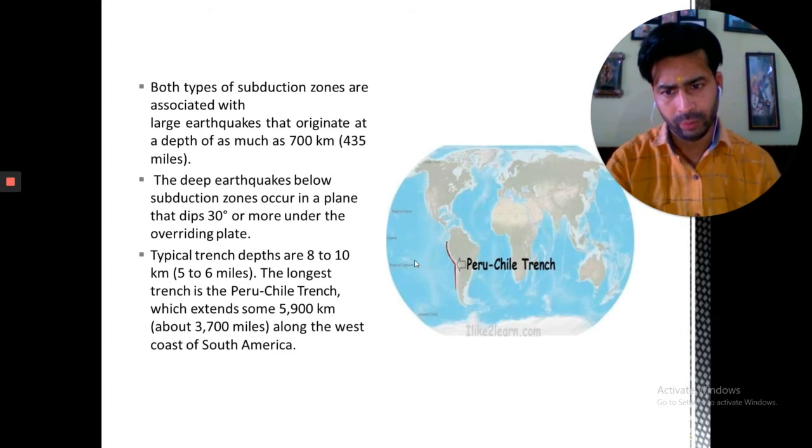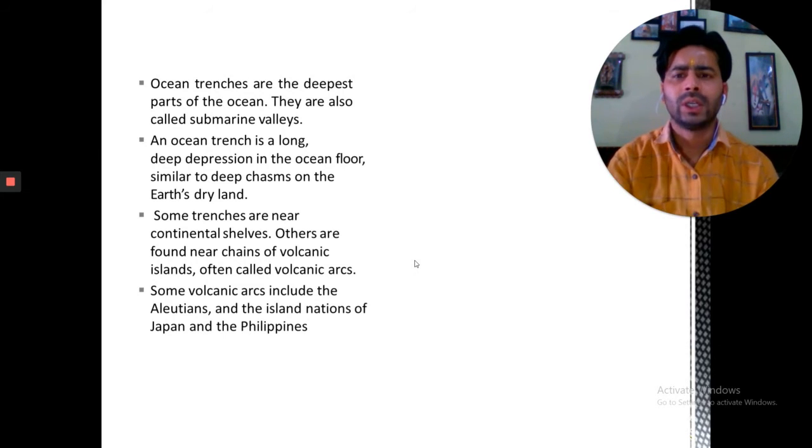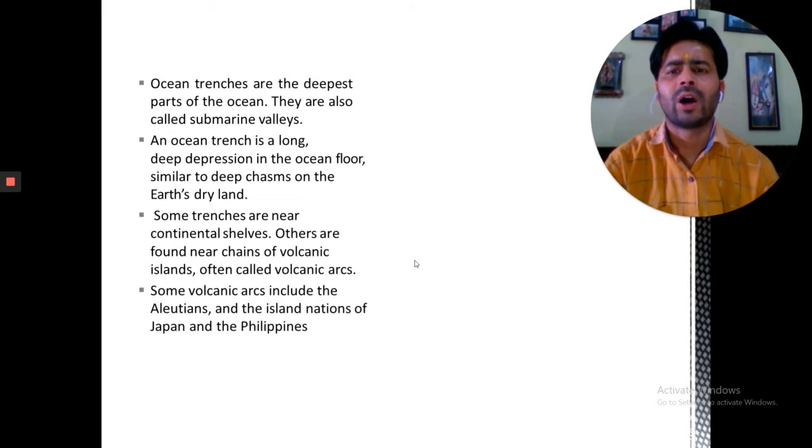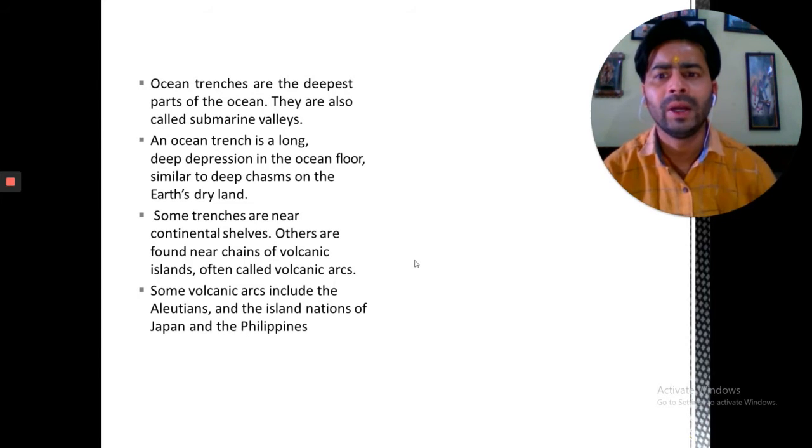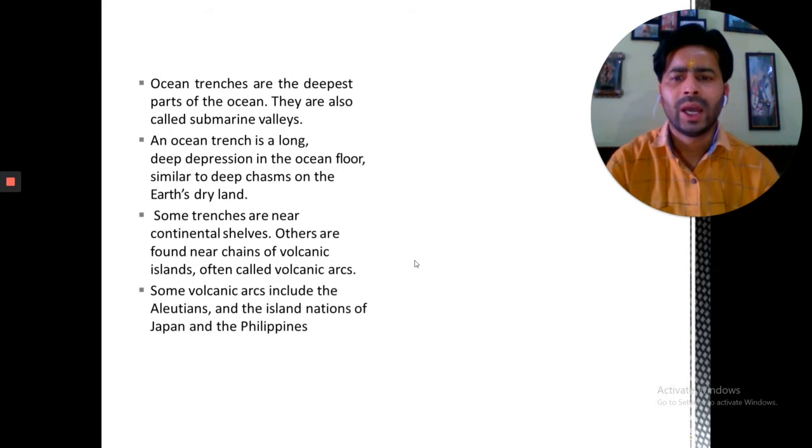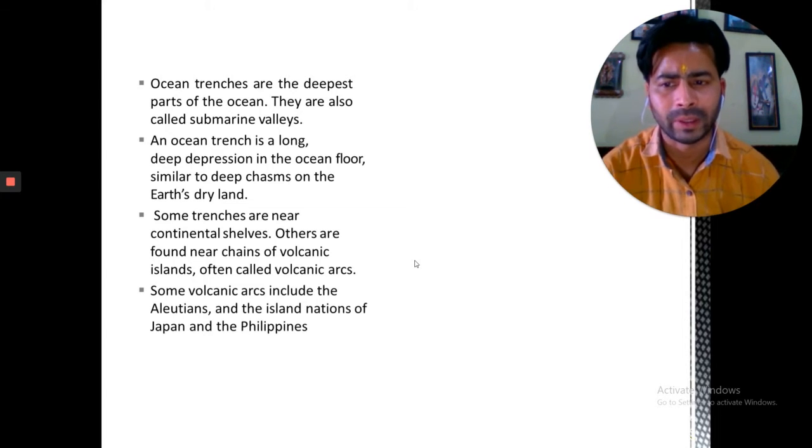Ocean trenches are the deepest part of the oceans. They are also called submarine valleys. An ocean trench is a long deep depression in the ocean floor, similar to deep chasms on earth's dry land. Some trenches are near continental slopes and others are found near chains of volcanic islands called volcanic arcs.